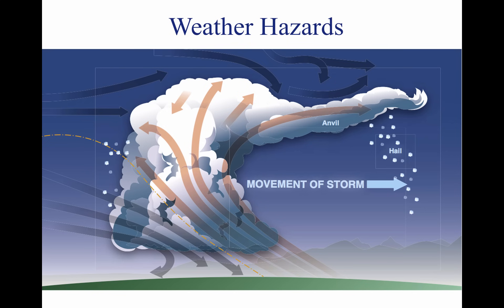A lightning strike can puncture the skin of an aircraft and damage communications and electronic navigational equipment. Although lightning has been suspected of igniting fuel vapors and causing an explosion, serious accidents due to lightning strikes are rare. Nearby lightning can blind the pilot, rendering him or her momentarily unable to navigate either by instrument or visual reference. Nearby lightning can also induce permanent errors in the magnetic compass. Lightning discharges, even distant ones, can disrupt radio communications on low and medium frequencies.